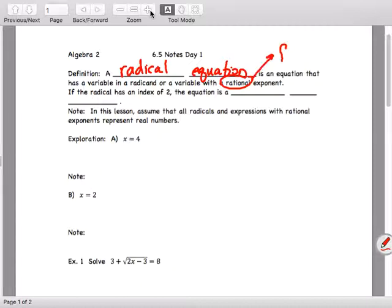So let's do that again. If you have a fraction exponent on a variable, that's going to technically be a radical equation. If the radical has an index of 2, the equation is a square root equation. Note, in this lesson, assume that all radicals and expressions with rational exponents represent real numbers.